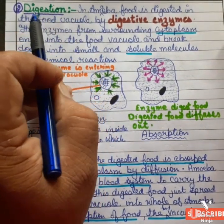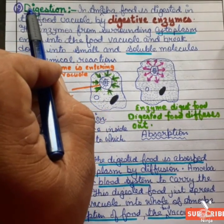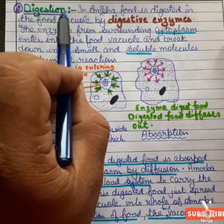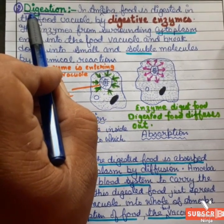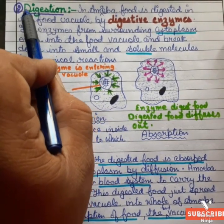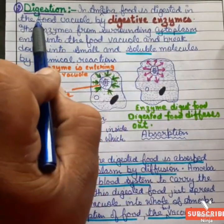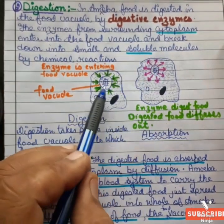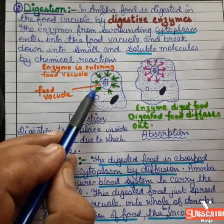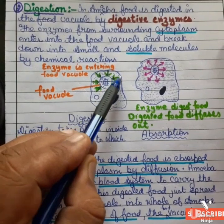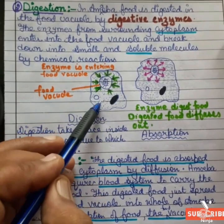The second step of nutrition in amoeba is digestion. The food which is ingested into the body of the amoeba with the help of finger-like pseudopodia is now digested. In amoeba, food is digested inside the food vacuole by digestive enzymes. This diagram shows how the digestive enzymes enter into the food vacuole to digest the food.